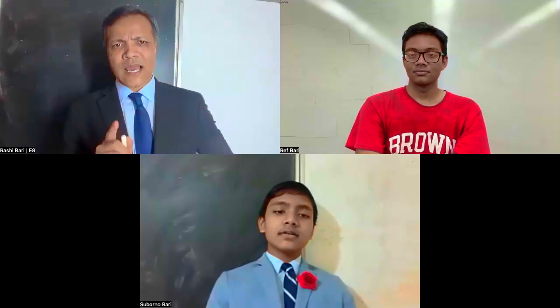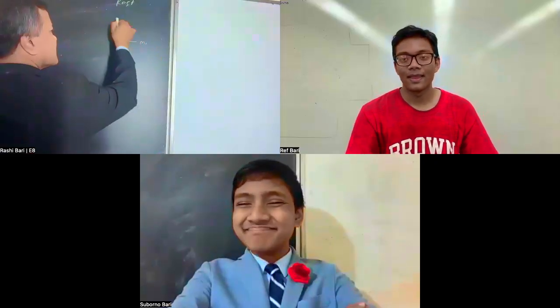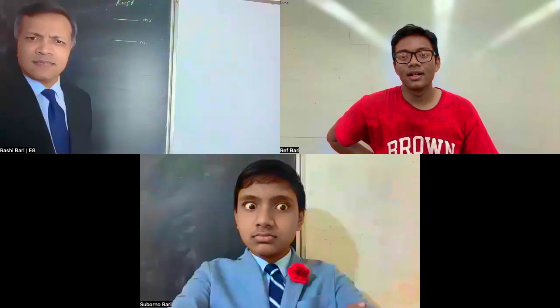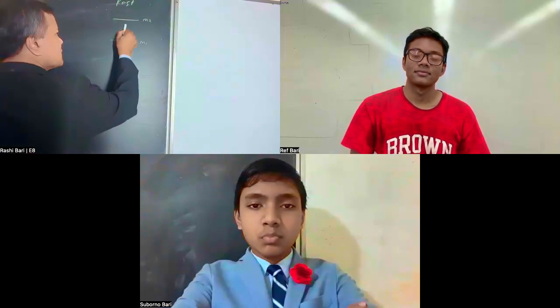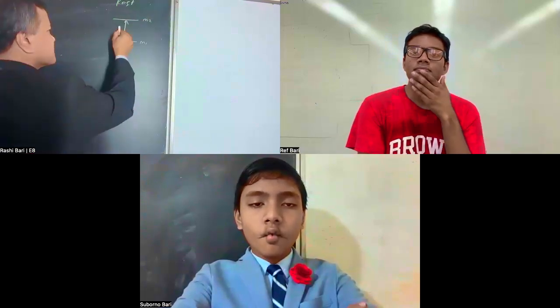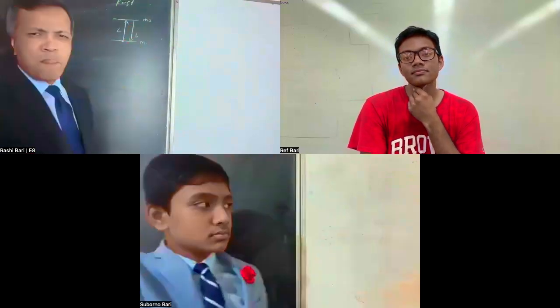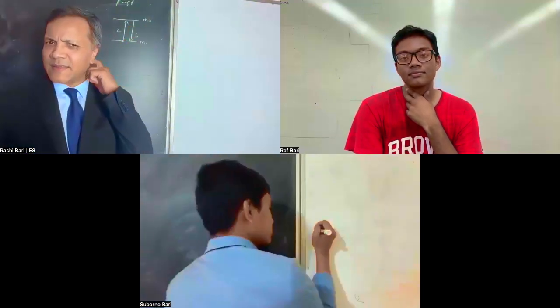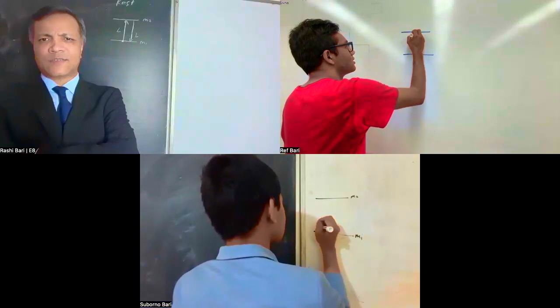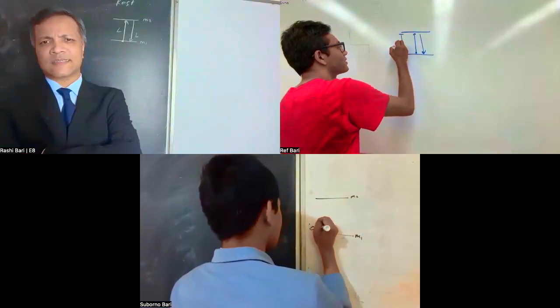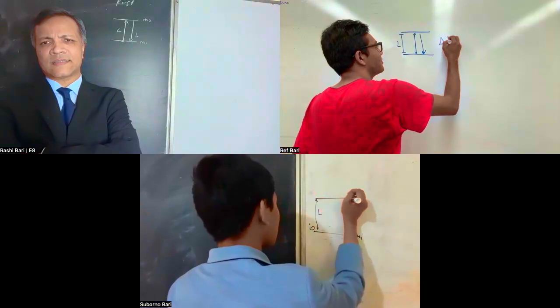So time dilation is when things are at rest, the clock moves as usual, but when things move faster and faster close to the speed of light, then clocks move slower. This is mirror one, this is mirror two. This is a light called photon. It moves the length L. Now can you write the equation for this one? Yeah, so this is at rest.